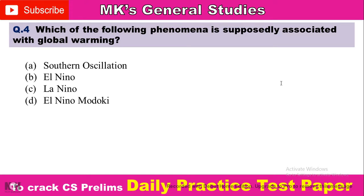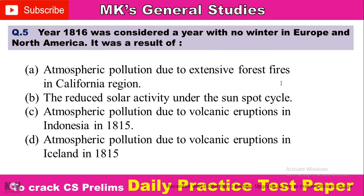Next question: Which of the following phenomena is supposedly associated with global warming? Option A: Southern Oscillation. Option B: El Niño. Option C: La Niña. And Option D: El Niño Modoki. So comment your answer here.